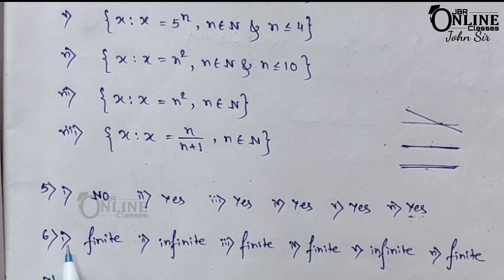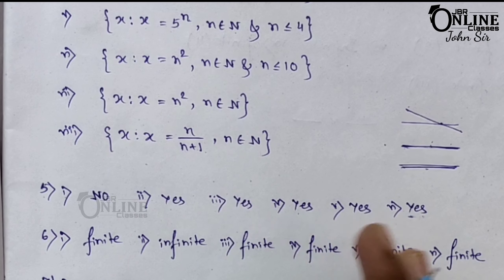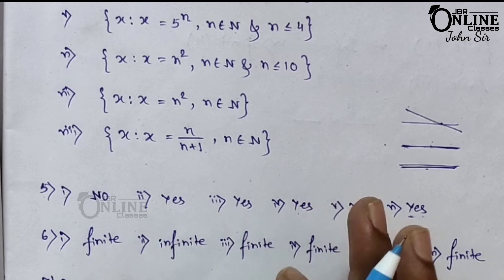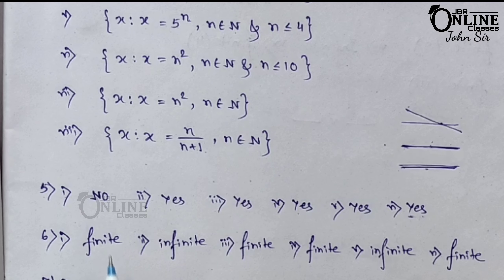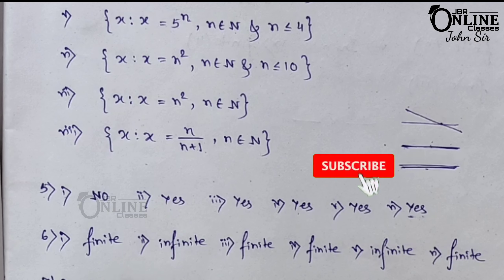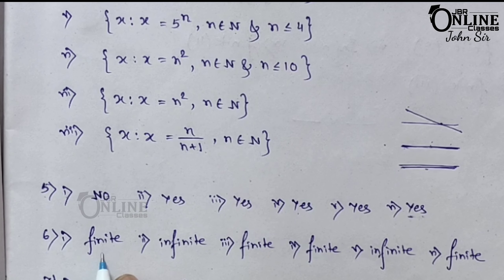Now number 6: which of the following sets are finite or infinite? Finite means a set with a fixed number of elements; infinite means no fixed number of elements — you can never finish counting. First one: the set of days of a week. A week has 7 days, so it's a finite set.